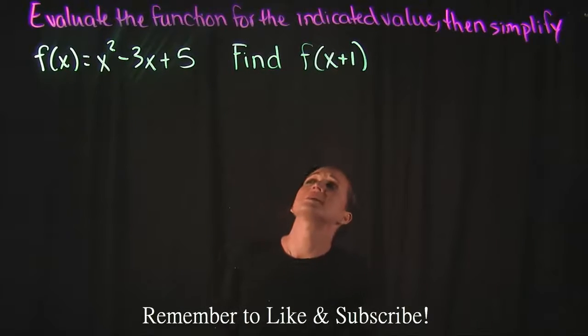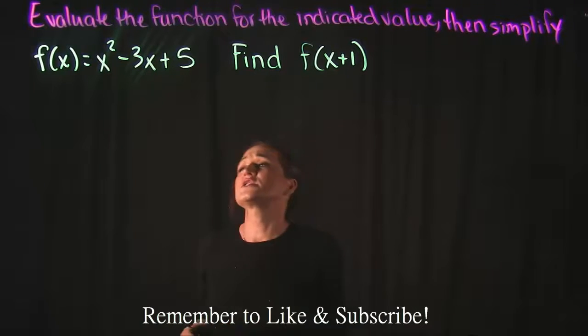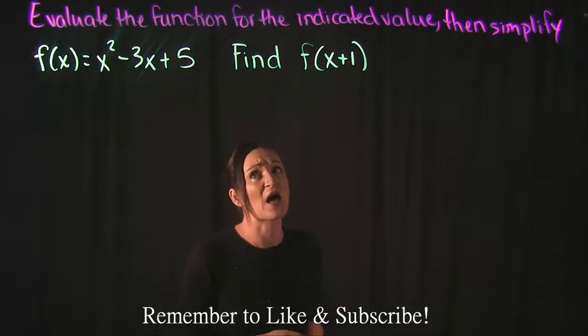For the following problem it says to evaluate the function for the indicated value then simplify. We have that f(x) is equal to x squared minus 3x plus 5 and they want us to find f of x plus 1.